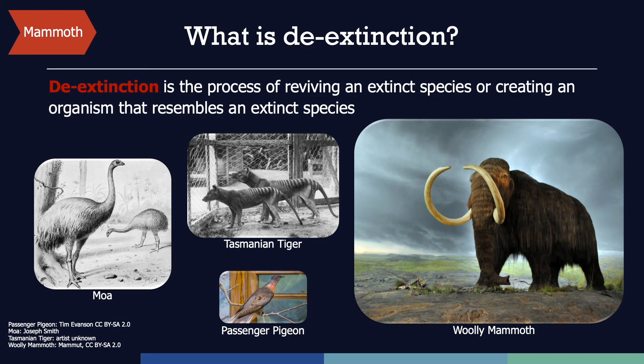The scenario describes the idea of de-extinction. De-extinction is the process of reviving an extinct species, or creating an organism that resembles an extinct species. Genome editing tools have made this a possibility that some people are interested to consider, and the animals shown on this slide are all currently the focus of various de-extinction projects.